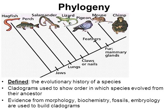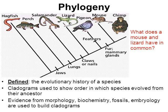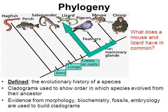Same cladogram, different question: what does a mouse and a lizard have in common? They have jaws in common, they have lungs in common, and they have claws or nails in common. But then they split — the lizard splits and goes one direction, the mouse splits and goes another direction. So everything before the split, they share in common.